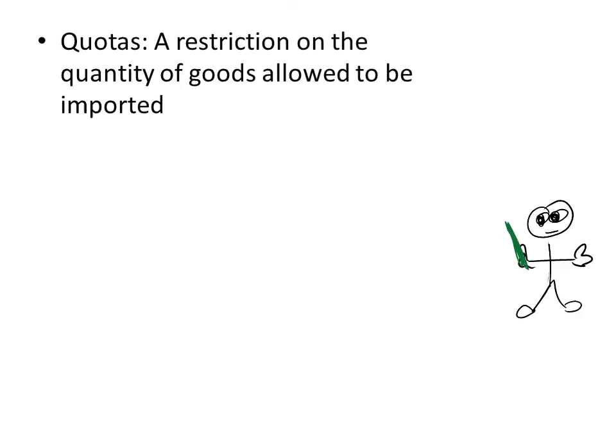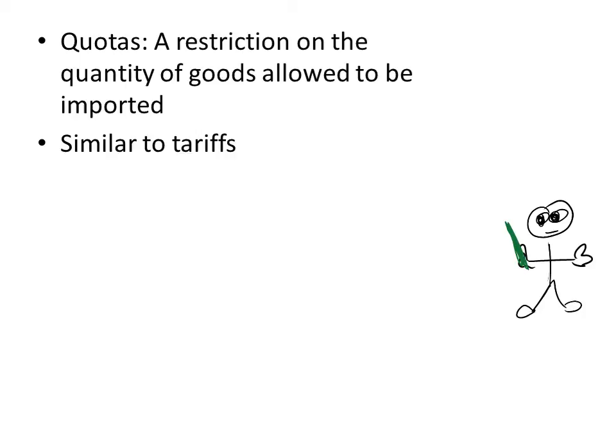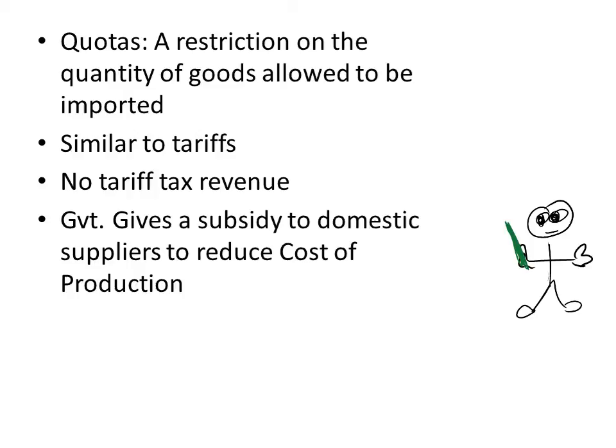You've got quotas — a restriction on the quantity of goods allowed to be imported. This is similar to tariff support: it raises prices, restricts the supply, squeezes imports in terms of quantity. There is no tariff tax revenue to the government from quotas. Government gives a subsidy to domestic suppliers to reduce cost of production. An example being the French government subsidised Air France to help. Air France is not owned by the French government though.